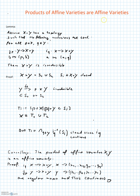Actually we are going to prove a statement that is slightly more general, and this is the following lemma. Assume that X×Y has a topology such that the following inclusions are continuous for all p in X and q in Y. For every p, j(p) is an inclusion from Y to X×Y sending elements b of Y to pairs (p, b), and for every q in Y, i(q) is an inclusion sending elements a of X to pairs (a, q). Given that these inclusions are continuous, we can conclude that X×Y is irreducible, and this is what we are going to prove.